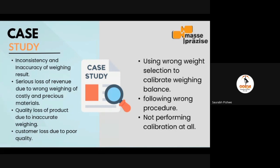There are three basic points for what can happen: first, using wrong weight selection to calibrate the weighing balance; second, a person following the wrong procedure that is not up to the standard; and third, the calibration has not been performed at all. This can lead to inconsistency and inaccuracy of weighing results, serious loss of revenue due to wrong weighing, quality loss due to inaccurate weighing, overdoses or underdoses of components, and customer loss due to poor quality.